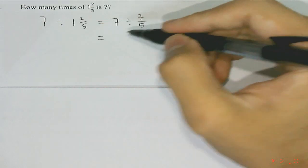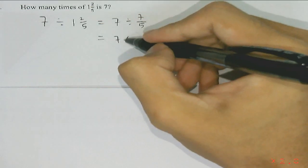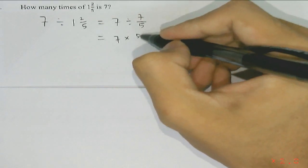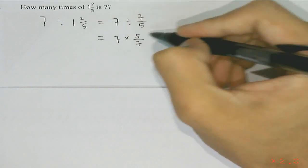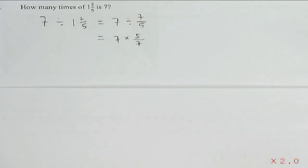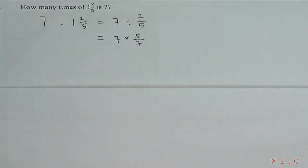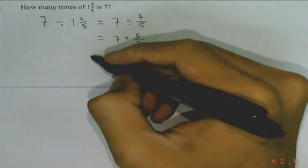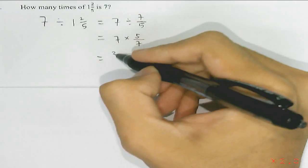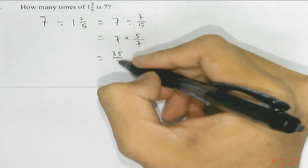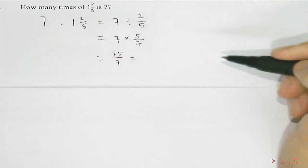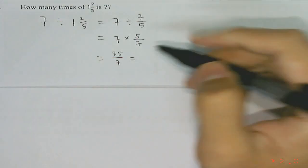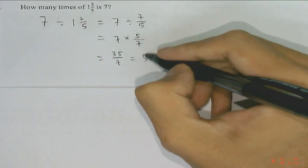Then we can change the division into multiplication by taking the reciprocal of the fraction. So 7 multiplying by 5 over 7 gives us 35 over 7. And 35 divided by 7 gives us our final answer of 5.